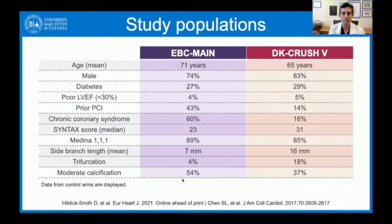Now let's look at some similarities — but more importantly, some differences — between the two trials. Patient age averaged 71 years in ABC Main versus 65 years in DK Crush 5. Chronic coronary syndromes were present in two-thirds of ABC Main patients and only 16% in DK Crush 5, where most patients had unstable angina. The SYNTAX score median was 23 in ABC Main versus 31 in DK Crush 5.